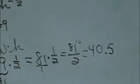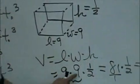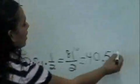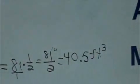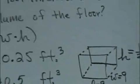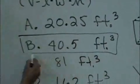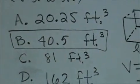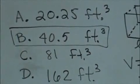Now let's remember that we are multiplying by feet, so it's length, width, and feet. So it's feet times feet times feet, so it's feet cubed. So our answer would be B, 40.5 feet cubed.